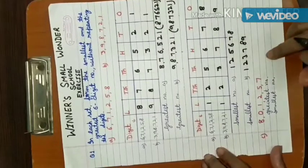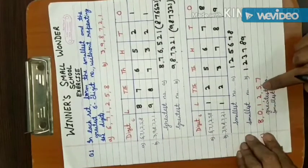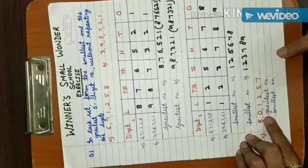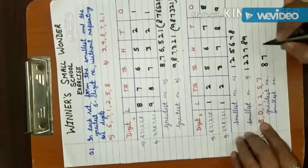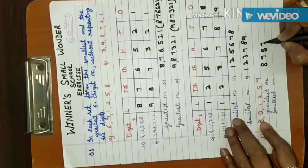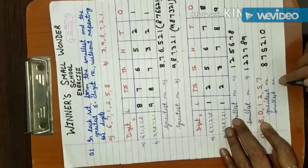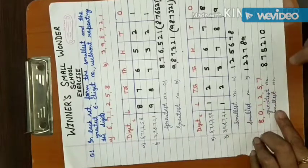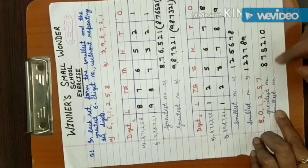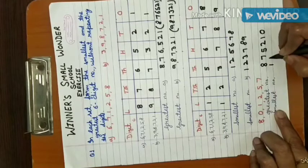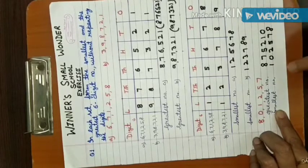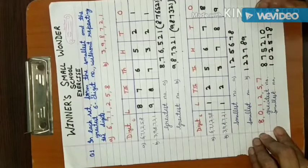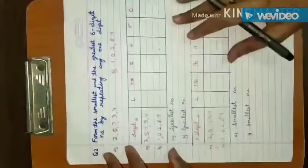Next question uses digits: 8, 0, 1, 2, 5, 7. The greatest number is arranged in descending order: 8, 7, 5, 2, 1, 0 — so greatest is 875210. For the smallest number, 0 is the smallest digit but we cannot write 0 at the extreme left, so the answer would be a 5-digit number if we did. Instead, we write 1 first, then 0, 2, 5, 7, 8 — so the smallest number is 102578.